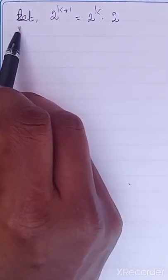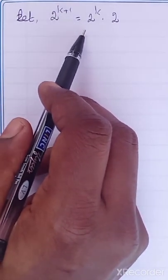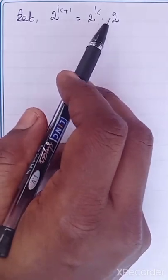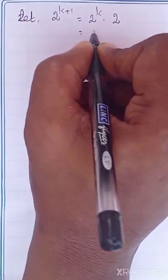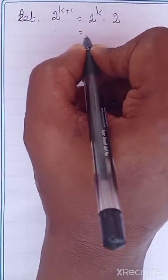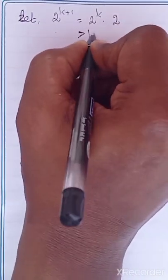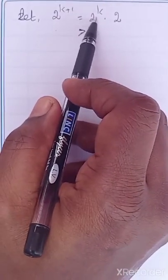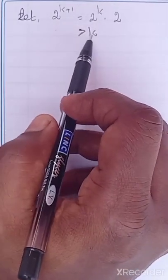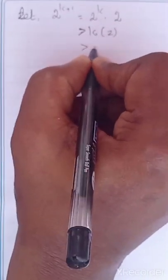Let us consider the term 2 power K plus 1. We can write 2 power K plus 1 as 2 power K into 2. Using the previous step, 2 power K is greater than K, so this is greater than K into 2, which is greater than 2K.